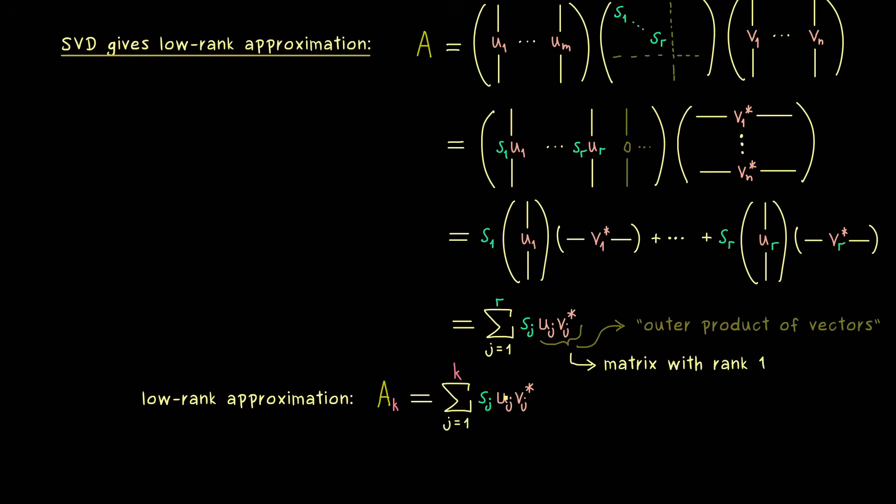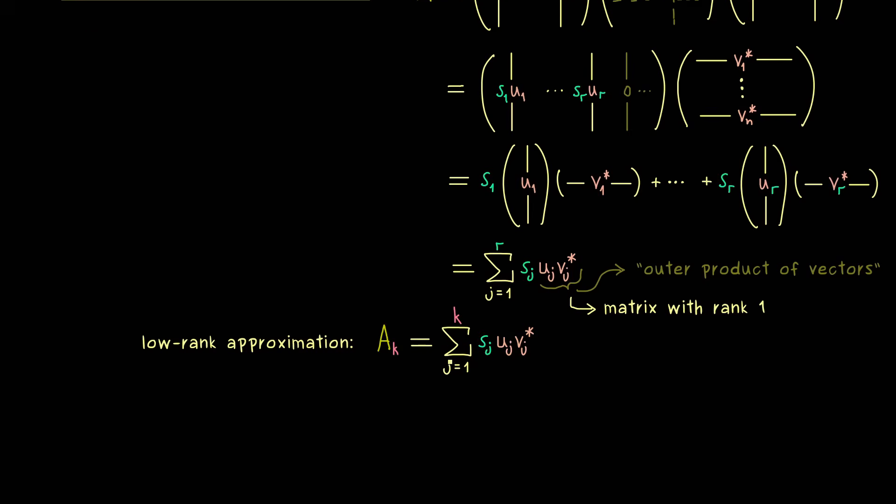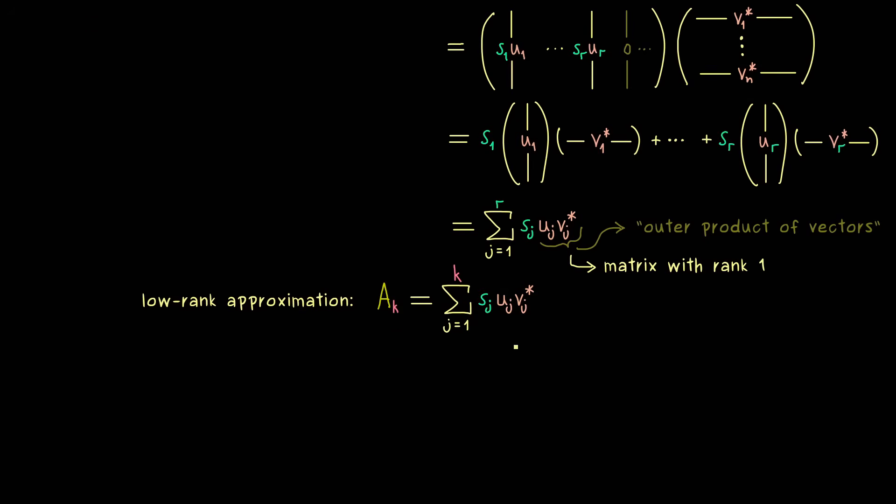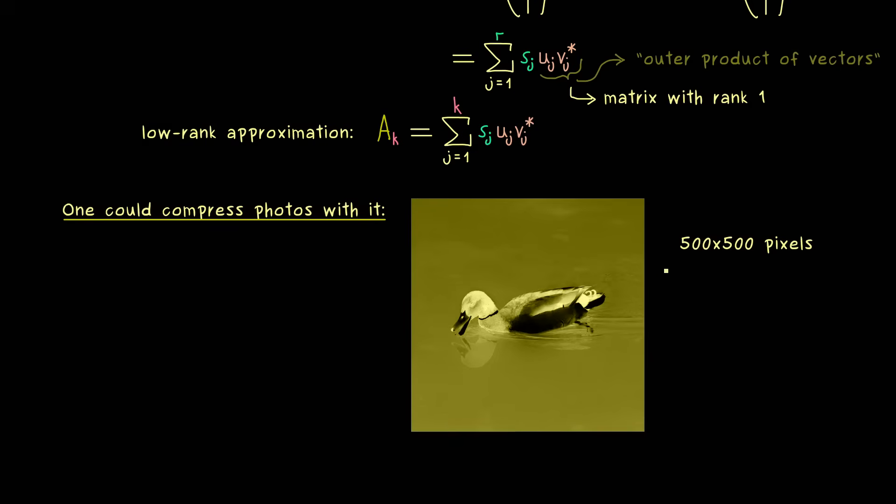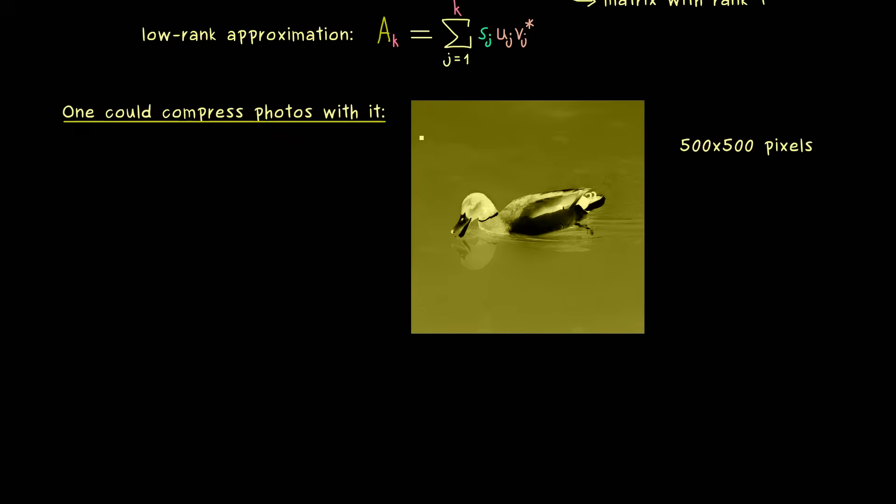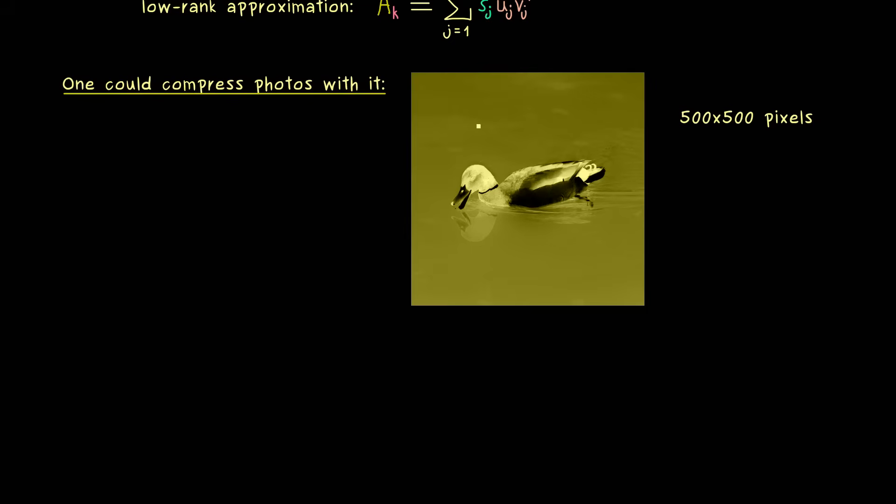So you see, if we stop the sum early, we lose some information from the matrix A, but maybe this information was not important, not essential for our application. For example, you could think of compressing photos with it, because we don't have to store all the pixel values, but just the singular values and the corresponding singular vectors. However, there it's important that we don't store all of them, but just the important ones.